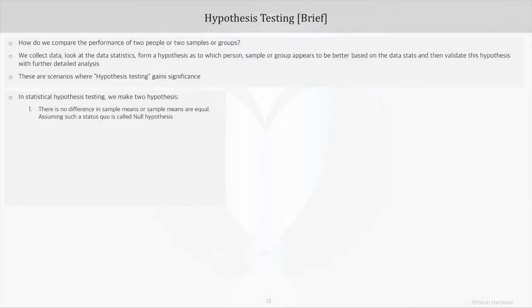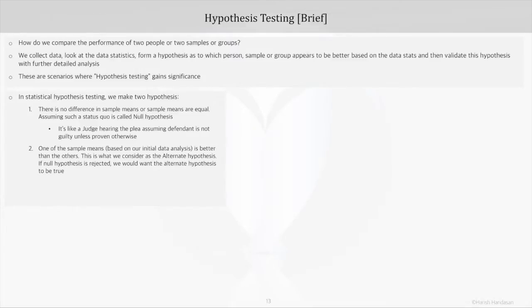So our first hypothesis would be that there is no significant difference in sample means, and this is what we call the null hypothesis. Let's take an example: a person is being tried in the court of law for an offense. The judge would always hear the plea assuming the defendant is not guilty unless proven otherwise. That's about the null hypothesis.